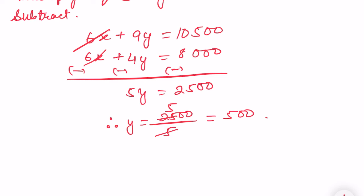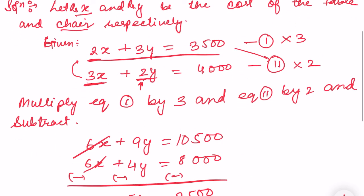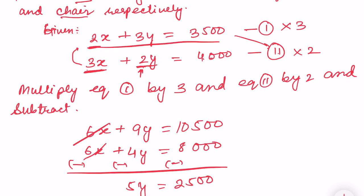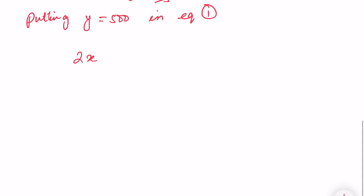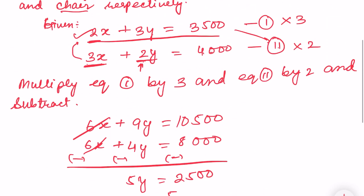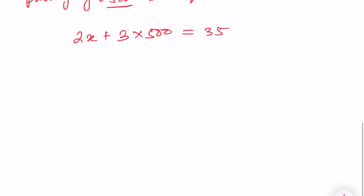Putting y equals 500 in equation 1. So 2x plus 3y equals 3500. 2x plus 3 times 500 equals 3500.